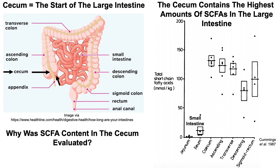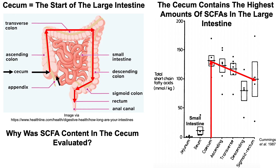Looking at the small intestine — the jejunum and ileum — there are very low levels of short-chain fatty acids. But in the cecum, we see the highest levels on the chart. As we progress through the colon — ascending to transverse, descending sigmoid colon, and through the rectum — short-chain fatty acid levels decrease along each length. They measured here because short-chain fatty acids are metabolized very quickly, so you want to capture them where they're found in the highest amounts.